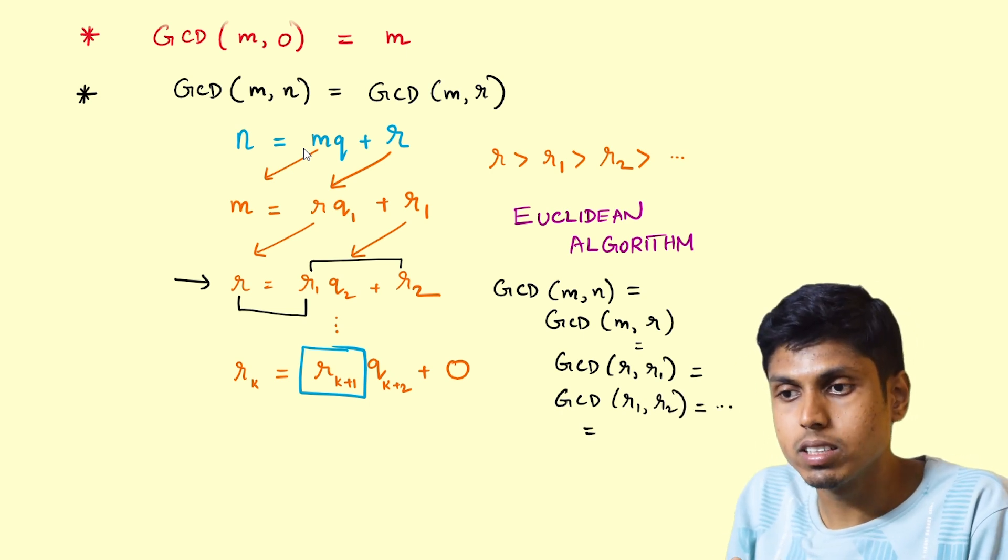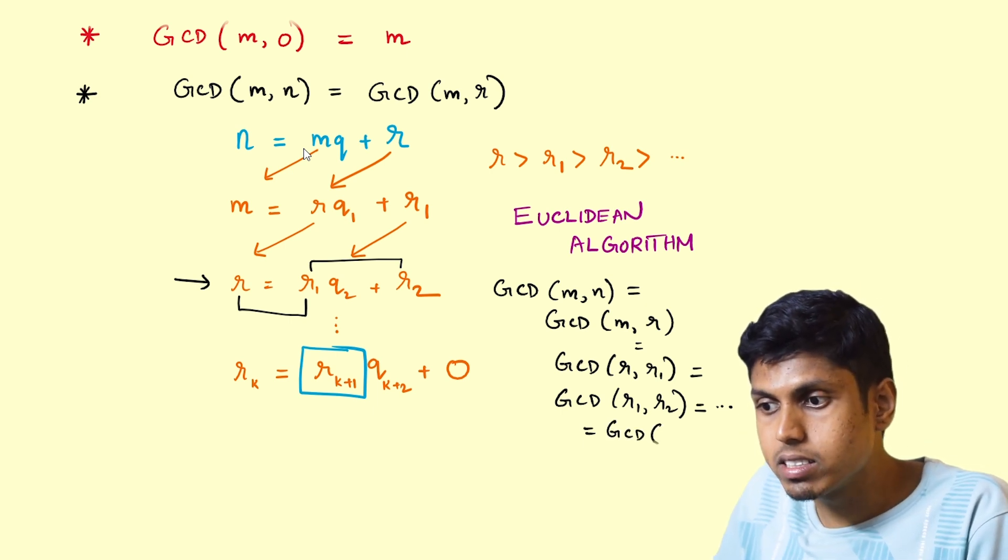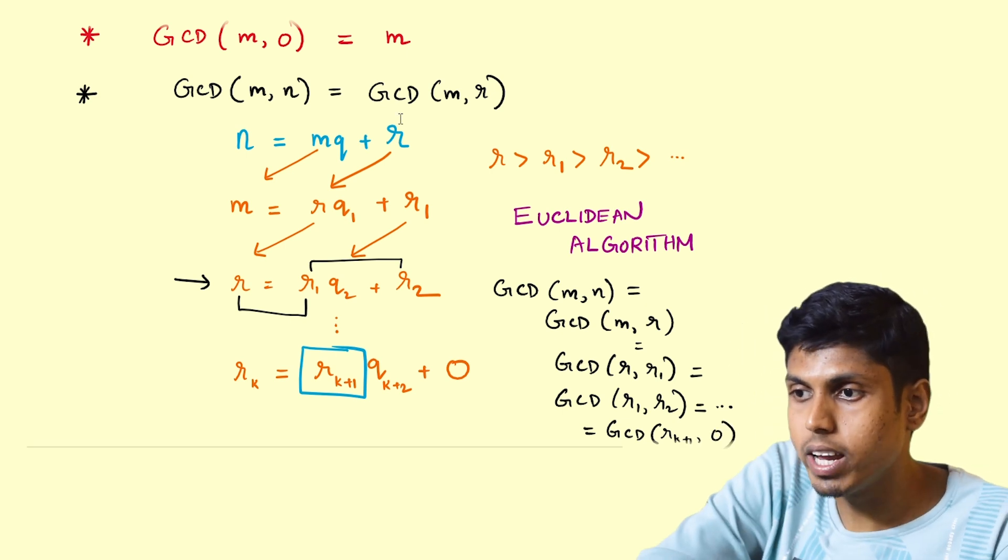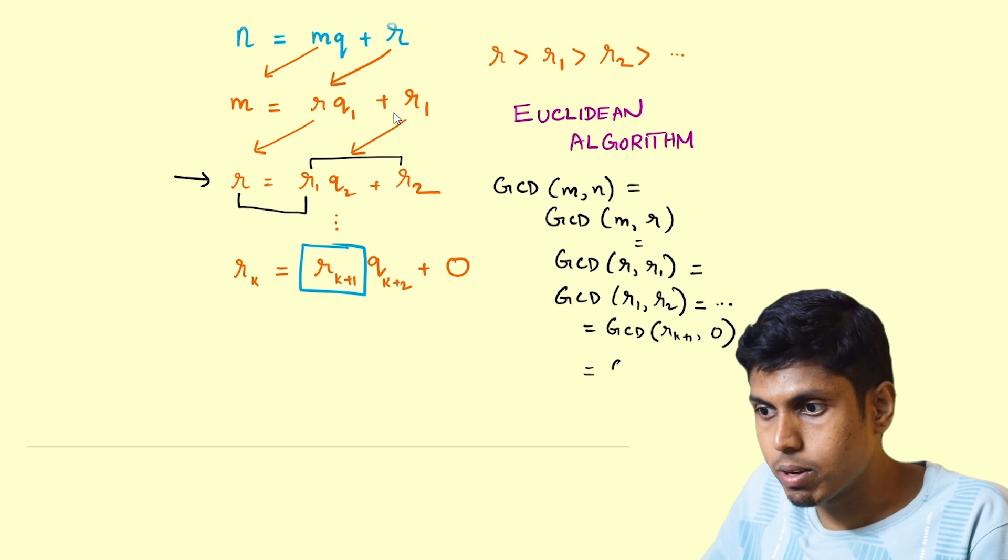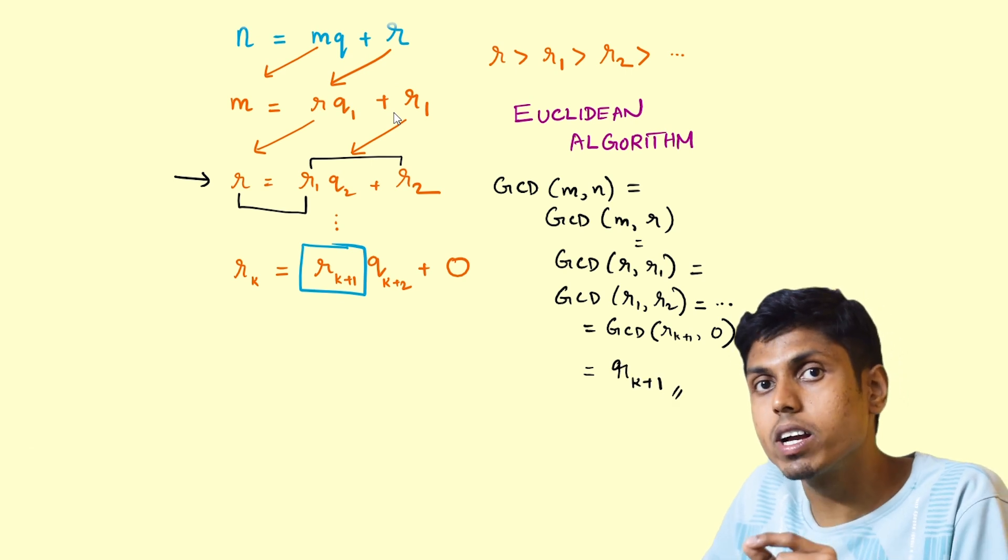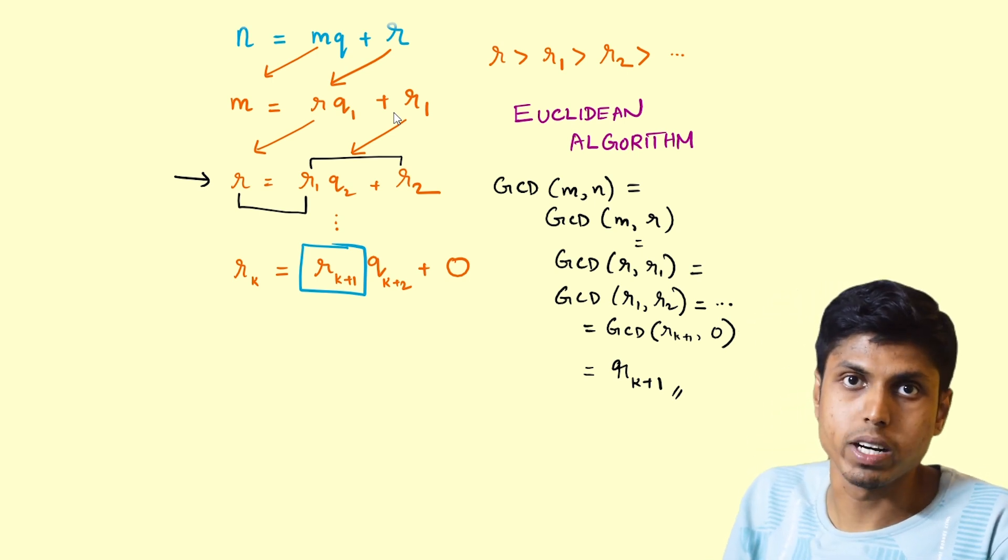So if one progresses like this, if one could progress like this down the equations, one would land up finding the GCD of rk plus 1 comma 0. And we know that GCD of any number comma 0 is the same number rk plus 1. So this is how we conclude that rk plus 1 is the greatest common divisor of m and n.